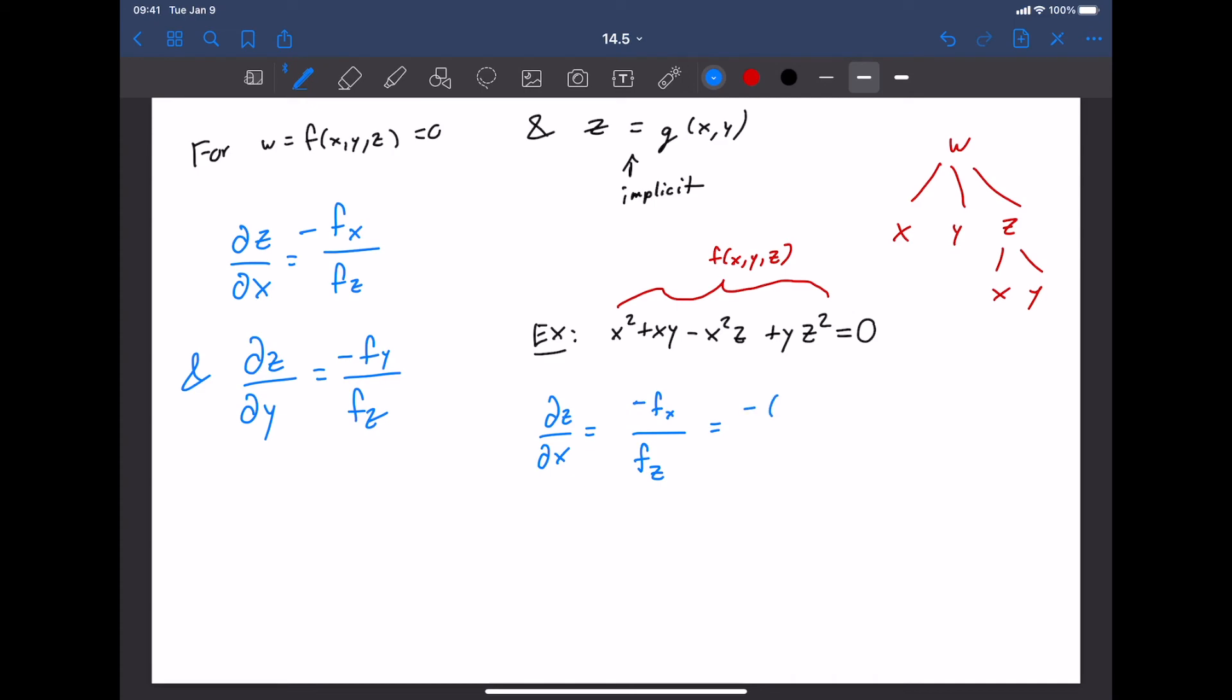So the derivative of that function or that side with respect to x, make sure you put the negative and the parentheses is 2x plus y minus 2xz. We're treating this part as a constant with respect to x because it doesn't have any x's in it. And all of that is going to be divided by that same equation with its derivative taken with respect to z. So now we're talking about negative x squared plus 2yz. This part being a constant with respect to z because it doesn't have any z's in it. And that's it. That's the partial derivative of z with respect to x.